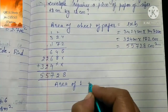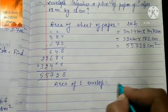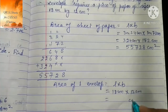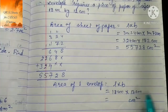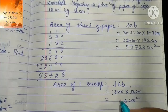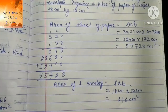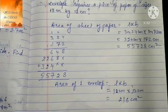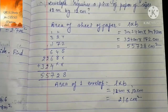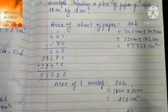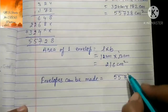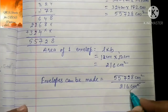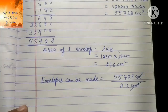Area of 1 envelope = length × breadth = 18 cm × 12 cm = 216 cm²। Number of envelopes can be made = area of sheet ÷ area of 1 envelope = 55,728 ÷ 216।